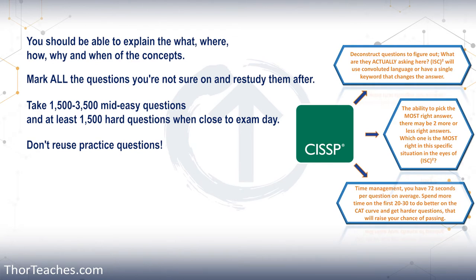Back to the actual questions and the exam. On the exam, if you do the CAT exam, you're going to get between 100 and 150 questions. 25 of those are experimental, meaning it doesn't matter if you answer them right or wrong — they don't count towards anything. They're just there for ISC² to test out new questions. So really, if you pass at 100 questions, you have to answer fewer than 75 correctly.